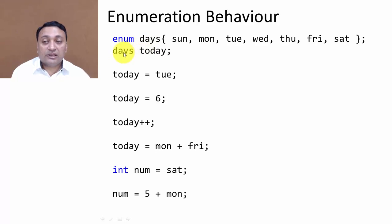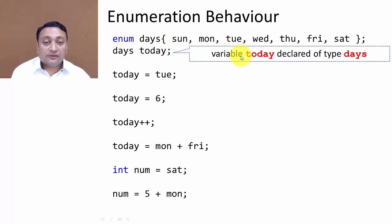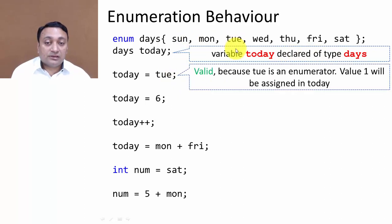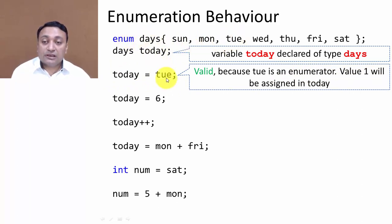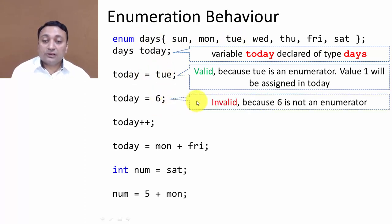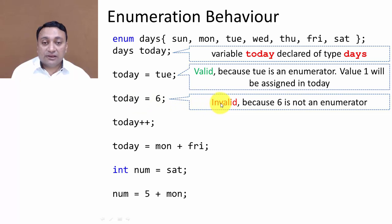Let us understand the behavior of enumeration. 'days' is a new data type just like integer. We can declare 'days today', making 'today' of type enumeration 'days'. Assigning 'tuesday' to 'today' is valid because tuesday is an enumerator value — the integer 1 will be assigned. However, trying to store the integer 6 directly into 'today' is invalid because 6 is not an enumerator.